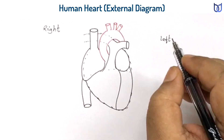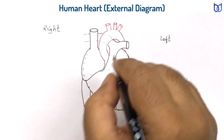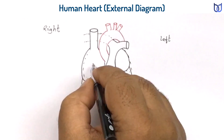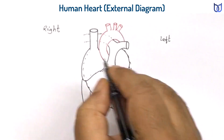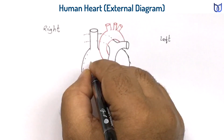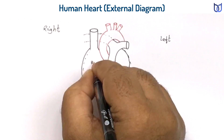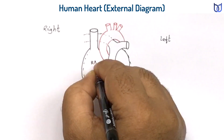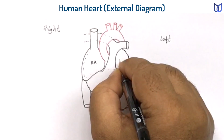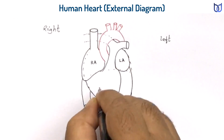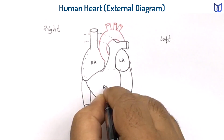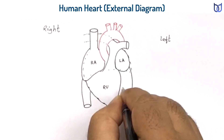Now write the names of the different structures shown in the diagram. This one is the left auricle, this one is the right auricle — in short, we may write right atrium and left atrium. Similarly, this one is the right ventricle and this one is the left ventricle.